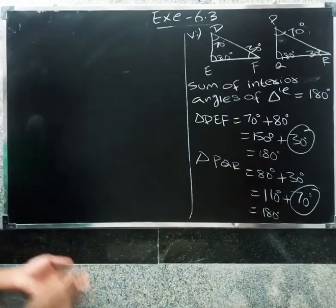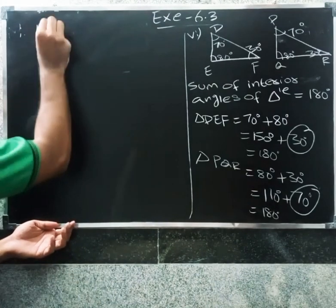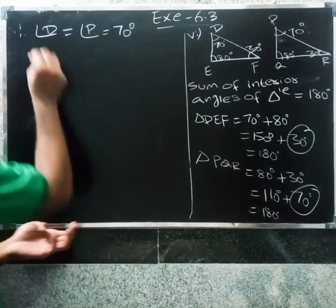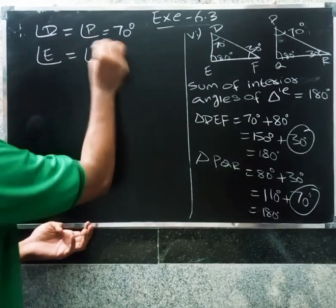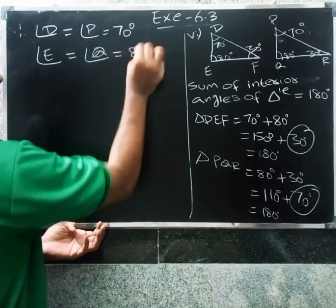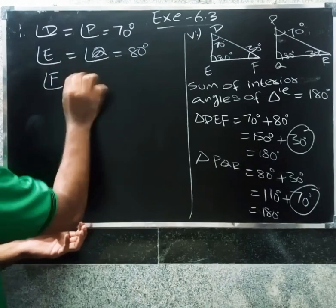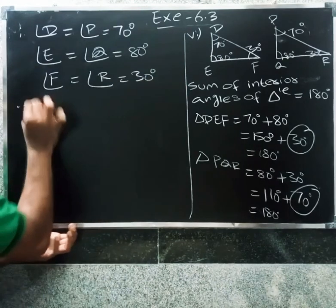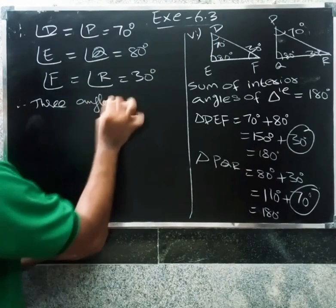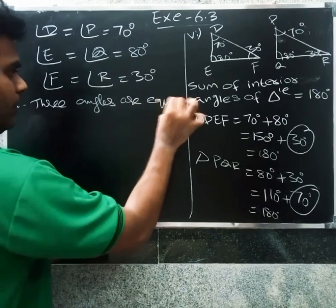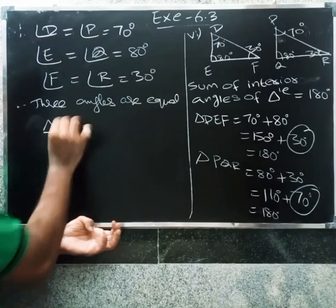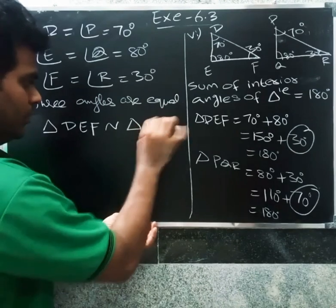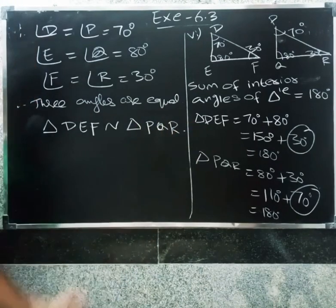Angle D equals angle P equals 70 degrees, angle E equals angle Q equals 80 degrees, angle F equals angle R equals 30 degrees. Therefore three angles are equal. By AAA criterion, triangle DEF is similar to triangle PQR.